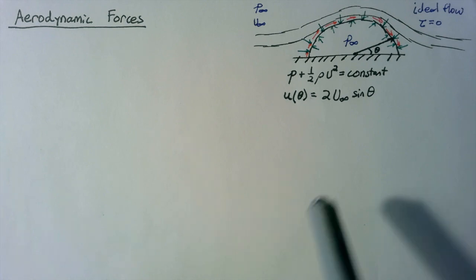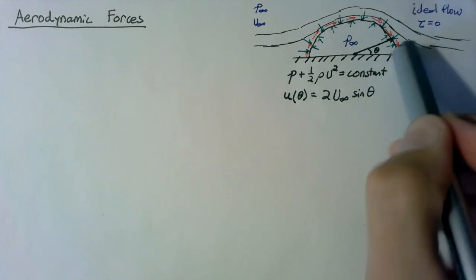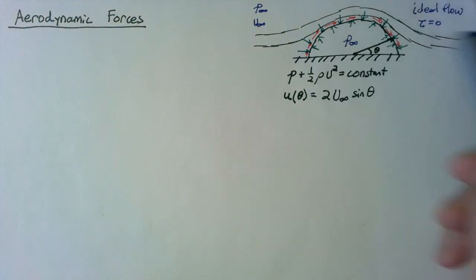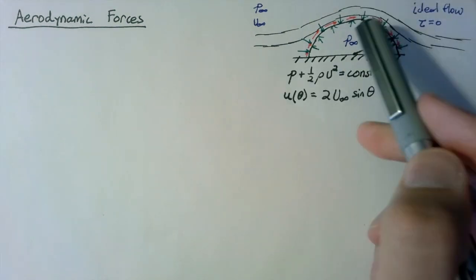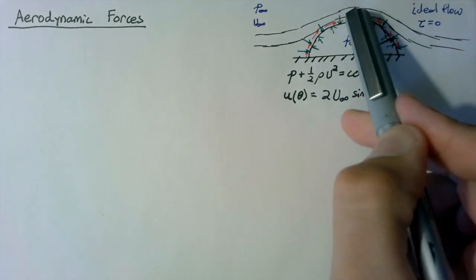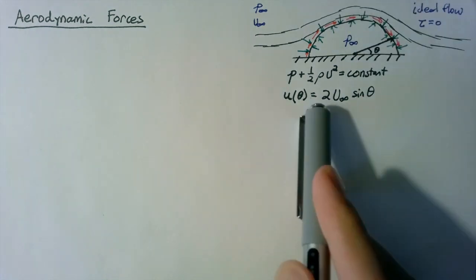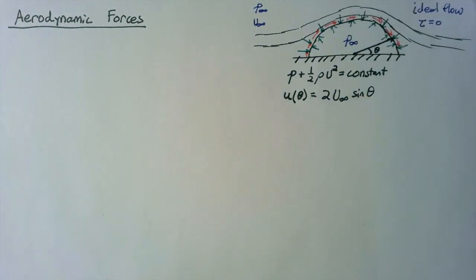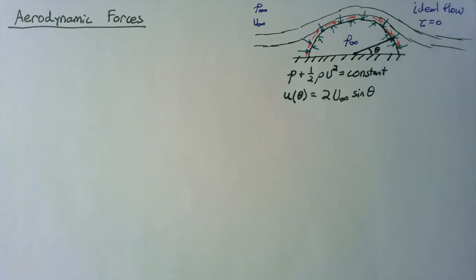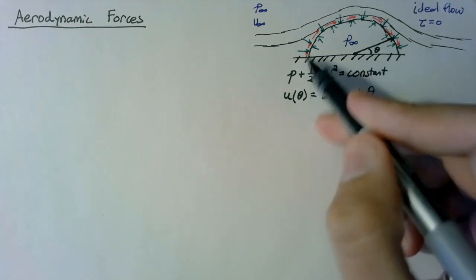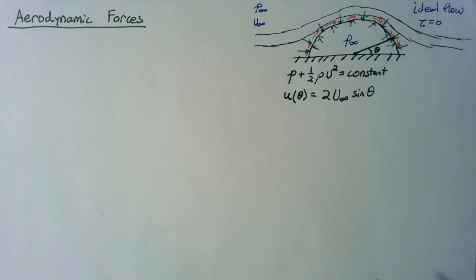When theta is equal to 0 or to pi, our velocity is going to be 0. And when it's equal to pi over 2, it's at its maximum — twice the far-field velocity. With these two pieces, we can come up with an equation for the pressure over our entire surface.